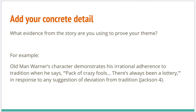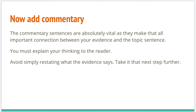Second, we need a concrete detail — the evidence from the story to help prove our theme. Here's my example: Old Man Warner's character demonstrates his irrational adherence to tradition when he says, 'Pack of crazy fools — there's always been a lottery,' in response to any suggestion of deviation from tradition. We'll talk about integrating quotes properly in another lesson.